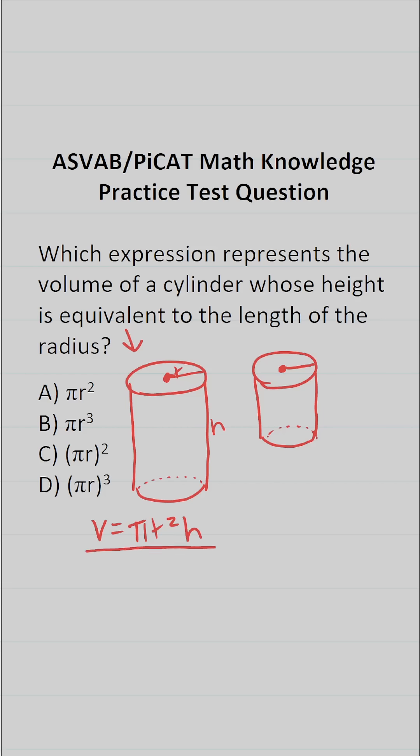So this is the formula to find the volume of a cylinder. But in this case, we're told that the height of our cylinder, H, is equal to the length of its radius. That is to say, H is equal to R. So let's go ahead and find the volume of this cylinder now.